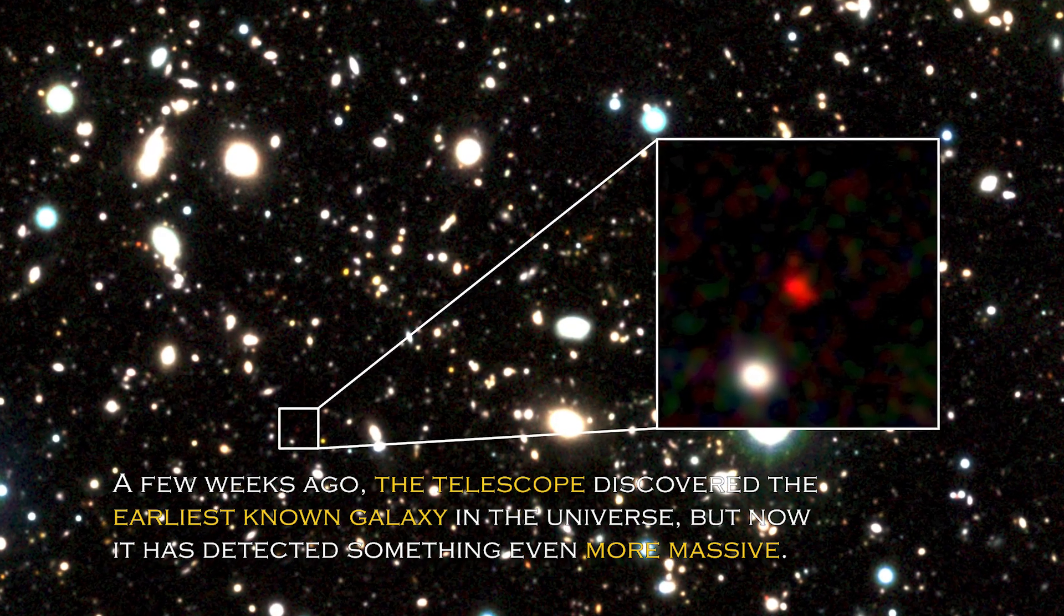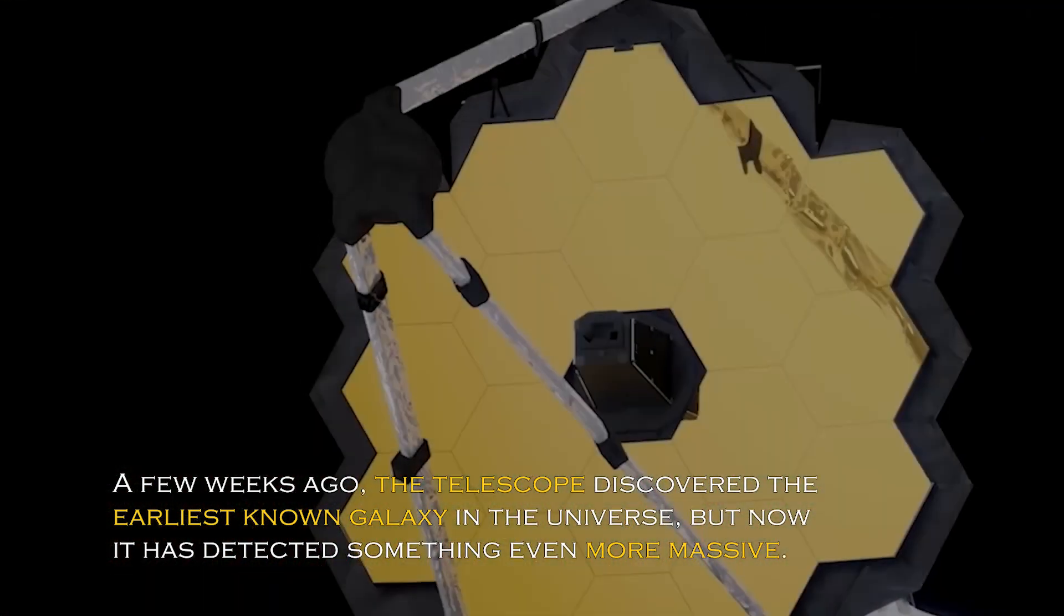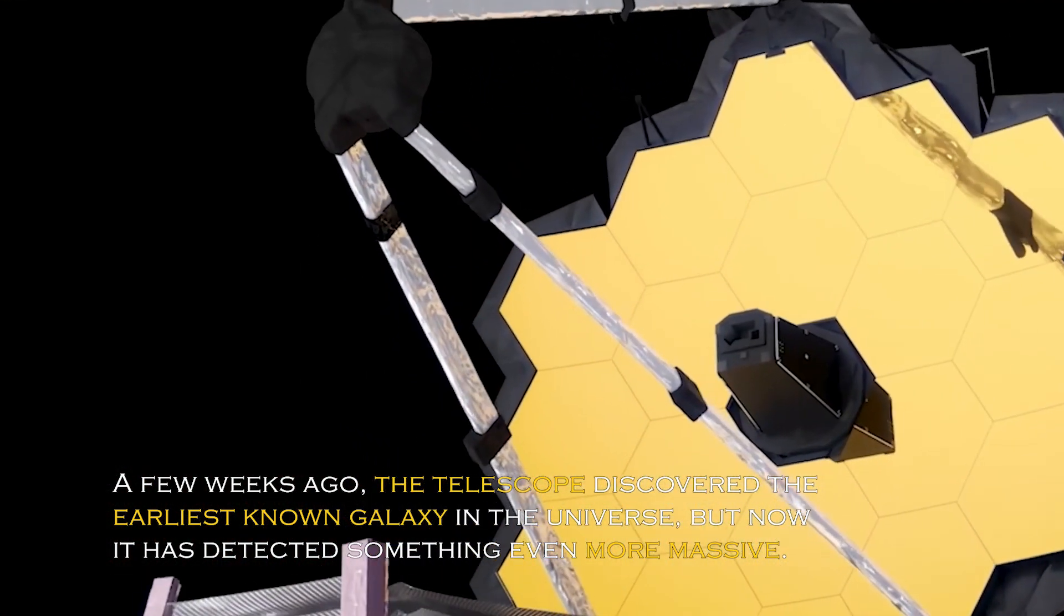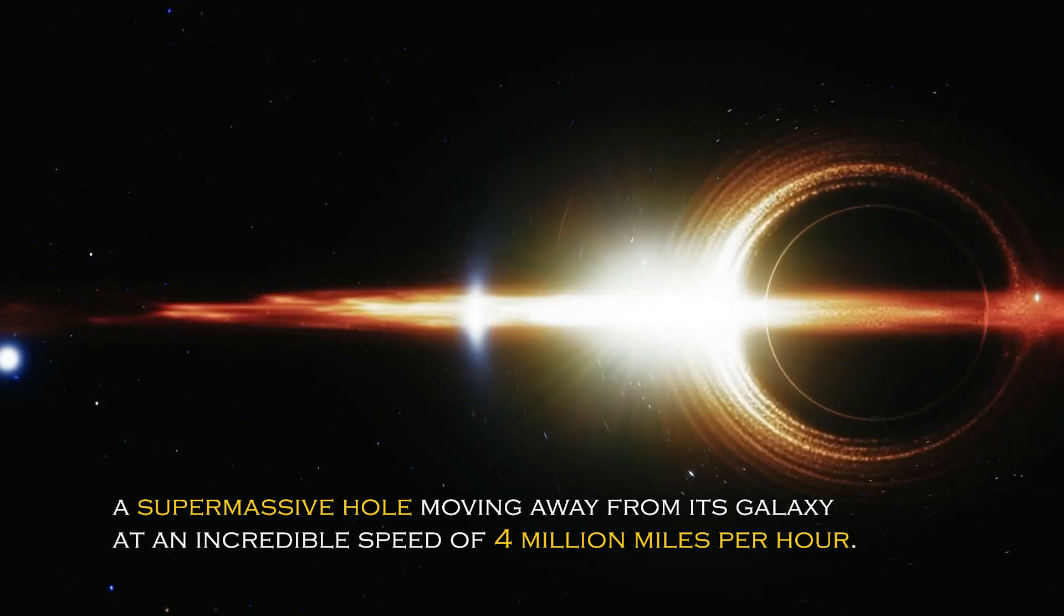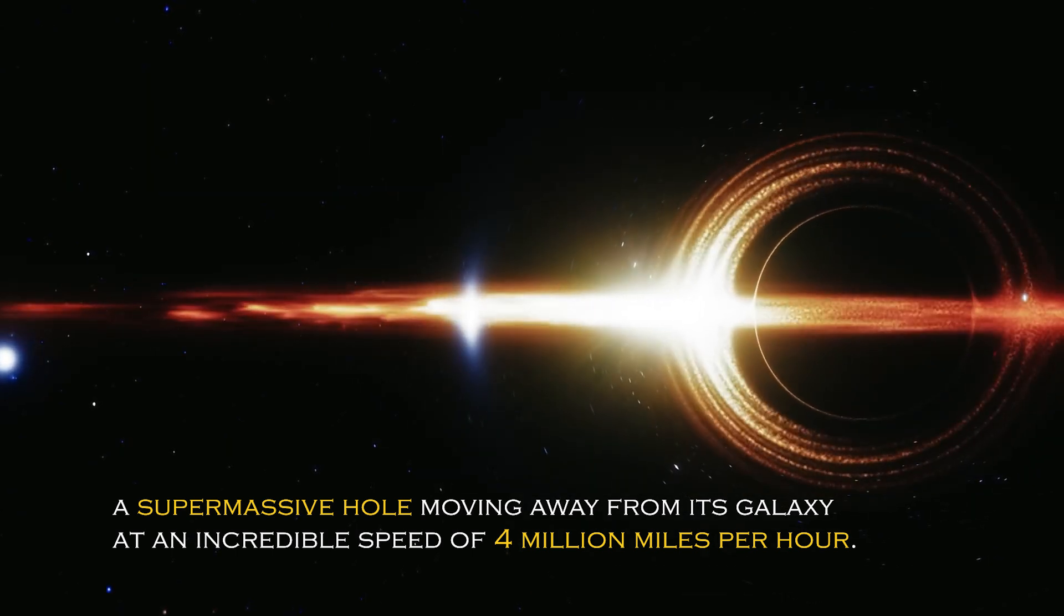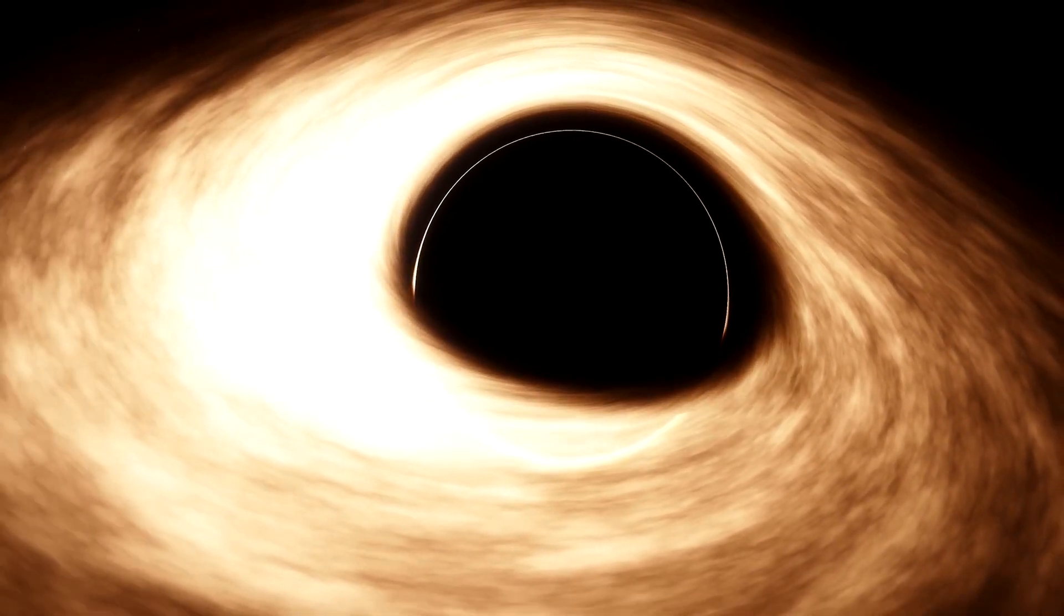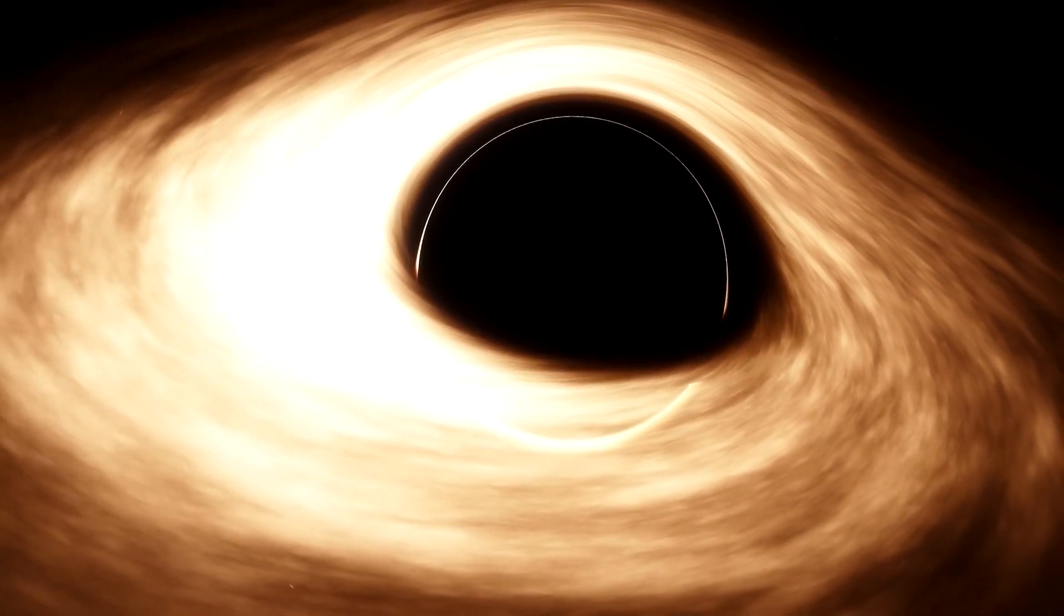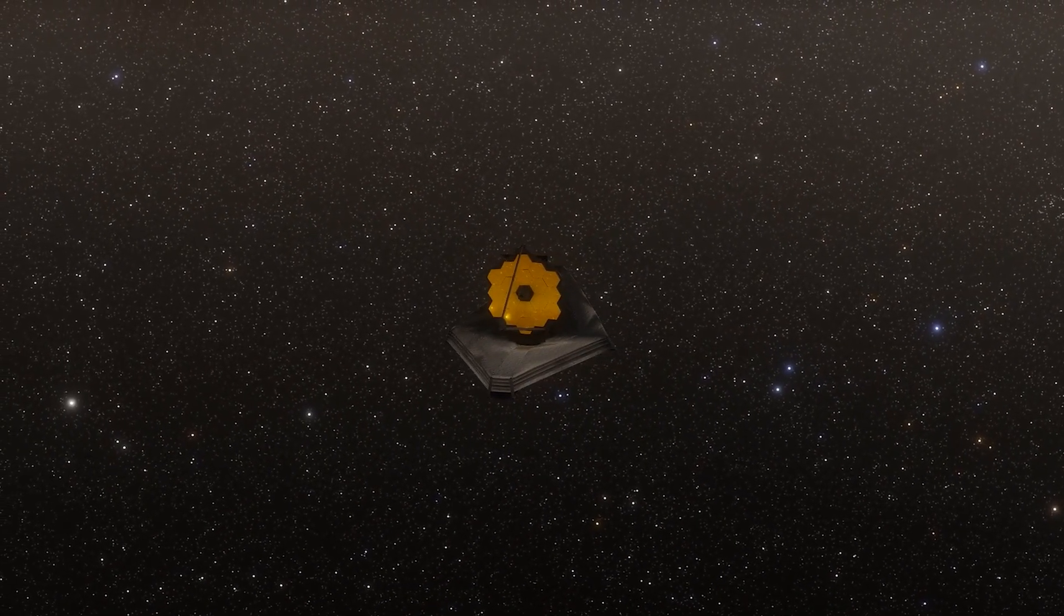A few weeks ago, the telescope discovered the earliest known galaxy in the universe, but now it has detected something even more massive – a supermassive black hole moving away from its galaxy at an incredible speed of 4 million miles per hour. This discovery has very important implications and has generated much speculation among scientists and space enthusiasts about what it means for our understanding of the cosmos.